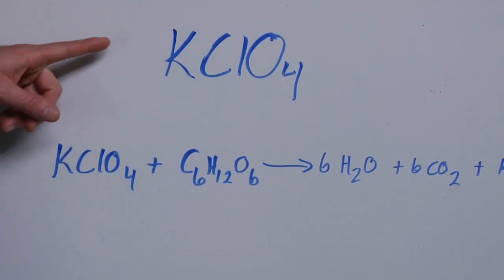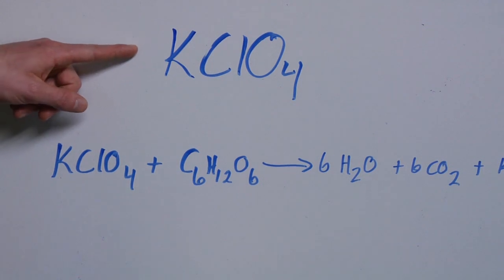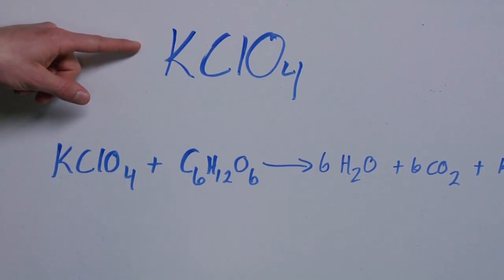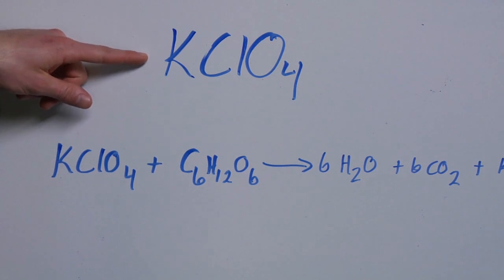So let's take a look. First, potassium perchlorate is K, which is potassium, and then chlorate is ClO4, so chlorine and four oxygens.